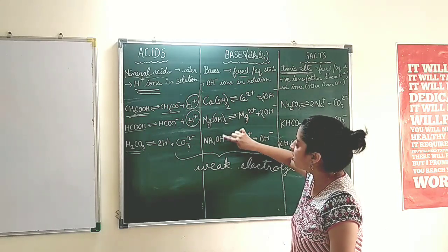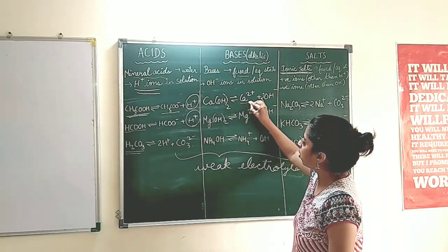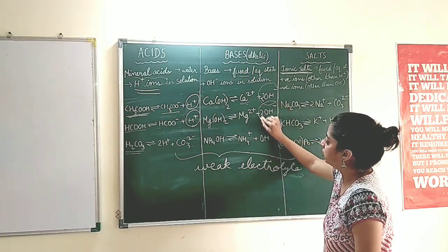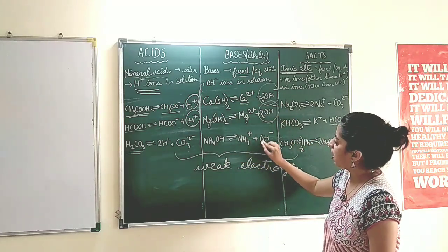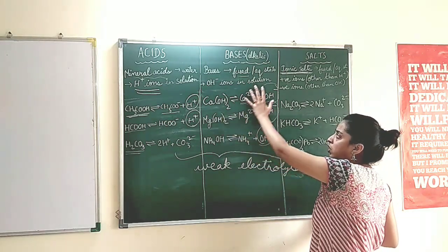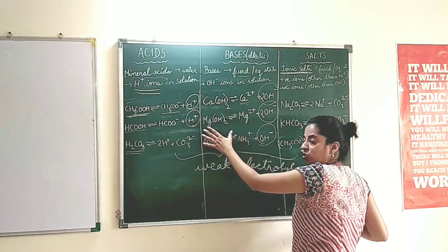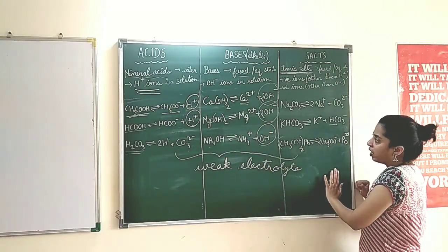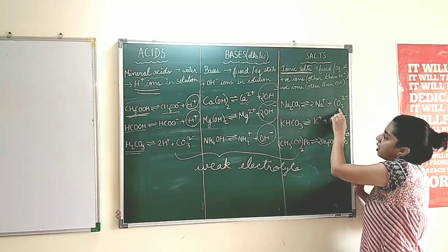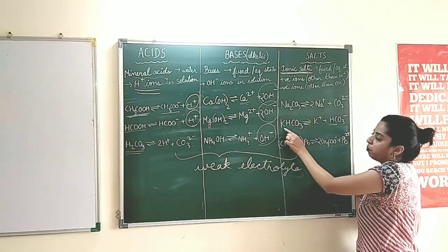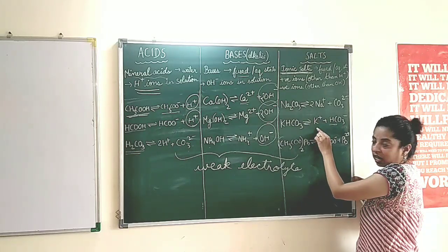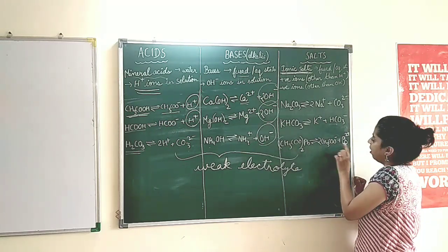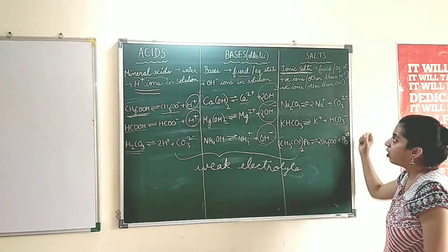In bases, calcium hydroxide, magnesium hydroxide and ammonium hydroxide are weak electrolytes. Calcium hydroxide ionizes to form Ca2+ and 2OH-. Magnesium hydroxide gives Mg2+ and 2OH- ions. Ammonium hydroxide gives NH4+ and OH- ions. They do not completely dissociate — a few molecules also remain. Examples of weak electrolyte salts are sodium carbonate (gives Na+ and CO3 2-), potassium bicarbonate (gives K+ and HCO3-), and lead acetate (gives acetate and Pb2+ ions).